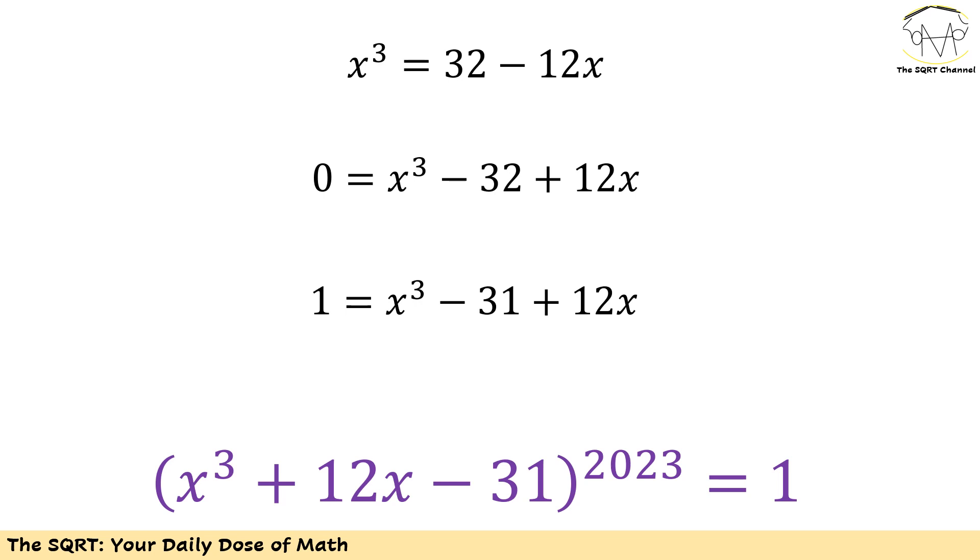Obviously, when x cubed is equal to 32 minus 12x, we can say that x cubed minus 32 plus 12x equals to 0. And since we don't need minus 32 but we need minus 31, I'm going to add one to both sides. Then x cubed minus 31 plus 12x is going to be 1. At the end, what we are going to evaluate is basically 1 to the power of 2023, which is 1, and that's our final answer.